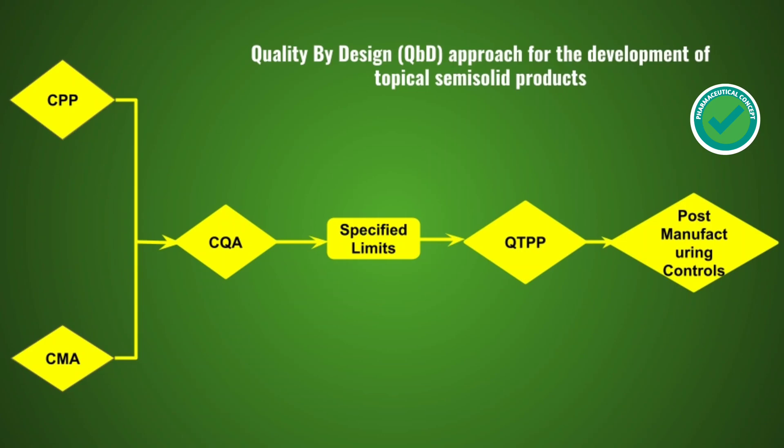This flowchart is about the Quality by Design approach for development of topical products. It covers CMA, CPP, CQA, specified limits, QTPP, and post-manufacturing control.